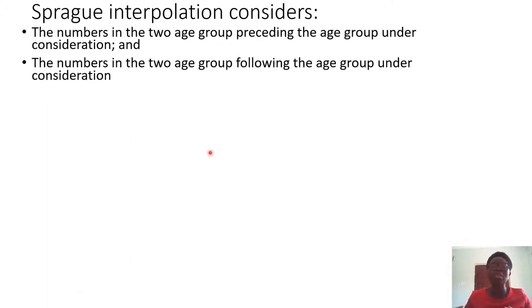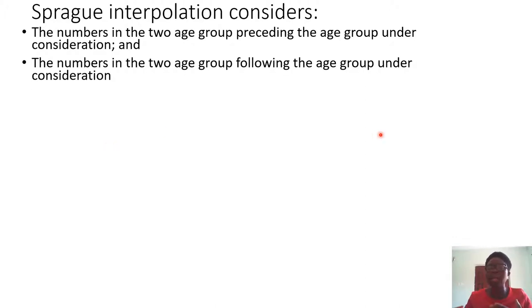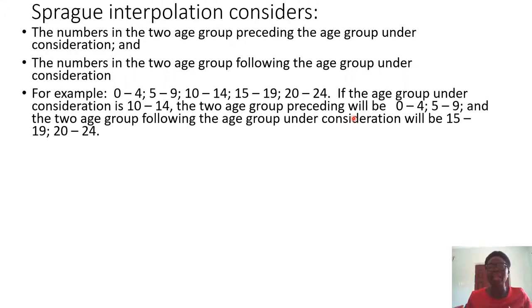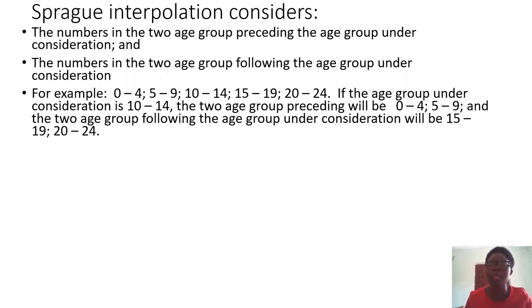Next, you must have the numbers in the age groups following the age group under consideration. Now let's say for example you have age groups: 0 to 4, 5 to 9, 10 to 14, 15 to 19, 20 to 24. If you are to consider the age group 10 to 14, that is the age group under consideration.